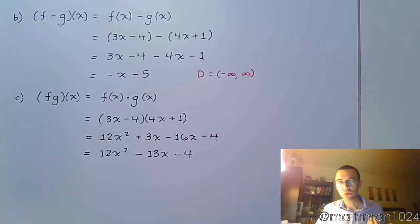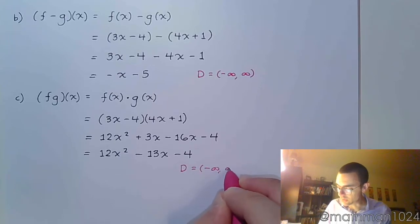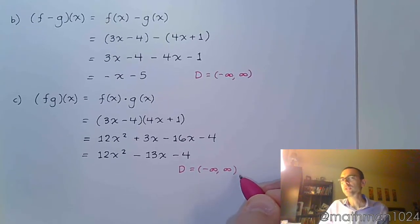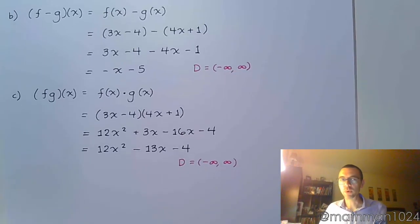Again, we see no square roots, we see no fractions, so we should be able to say that our domain is still all real numbers. When you come across this problem in the homework, once you type in negative infinity to infinity the first time, you might want to copy that so you can paste it later on, just save you a little bit of work.